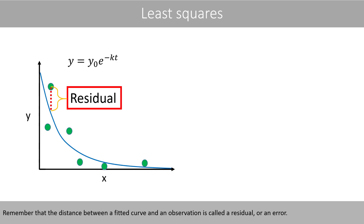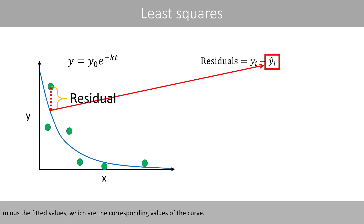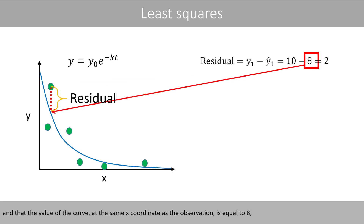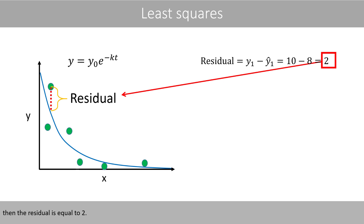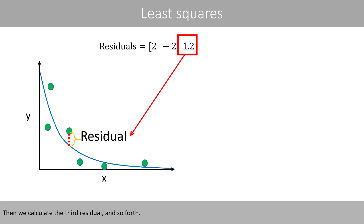Remember that the distance between a fitted curve and an observation is called a residual or an error. The residuals are calculated by taking the observed values minus the fitted values, which are the corresponding values of the curve. Suppose that the observed y-value of this observation is equal to 10, and that the value of the curve at the same x-coordinate is equal to 8. Then the residual is equal to 2. We then calculate the second residual in the same way — note that this residual is negative because the data point is below the curve — and then the third residual and so forth.